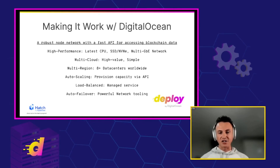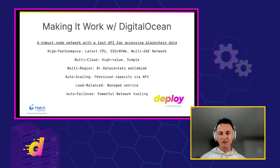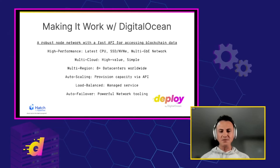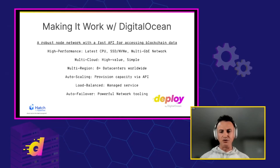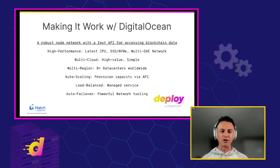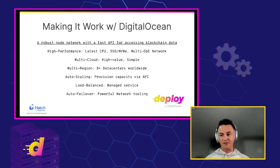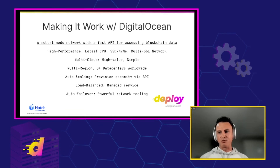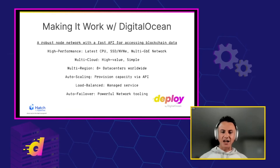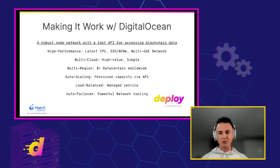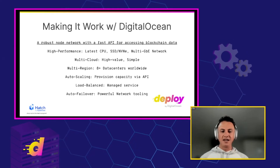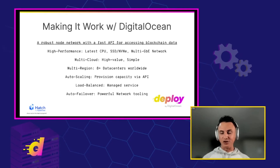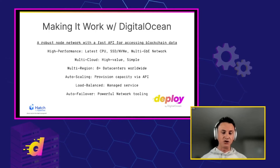Having load balancing as a managed service is also great. Having powerful networking tools like DNS management is super important to have an auto-failover network. If one region goes down, you can fail over to another region, and this makes for a much more robust, reliable product. Shout out to the Hatch program from DigitalOcean — when we were just a startup, we applied for Hatch, were accepted, and were able to experiment and play around with all the tools and products that DigitalOcean has to offer.